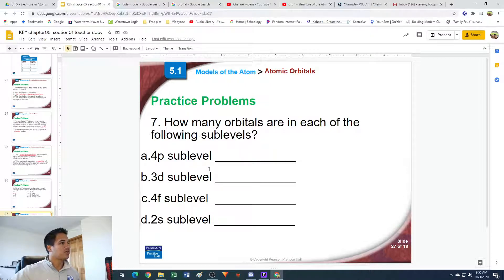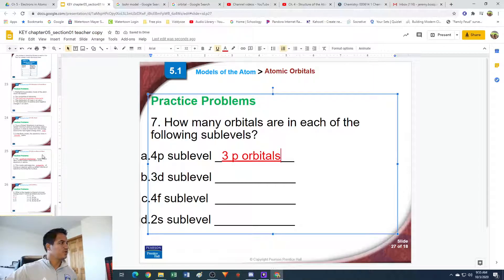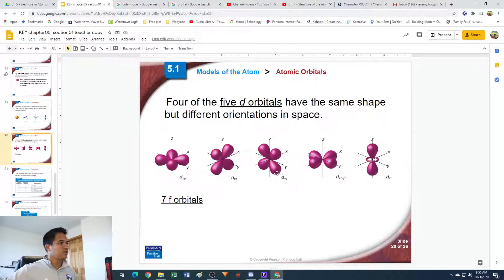Number seven. How many orbitals are in each of the following sublevels? This question - the answer, we strictly just have to look at the letter. The number four or three or two doesn't have any effect whatsoever, just the letter does. First one, 4p. In the p orbitals, there are three p orbitals. This is directly from the notes. If you're not sure, we can look back to these slides here. There's three p orbitals, one s orbital, five d orbitals, and seven f orbitals.